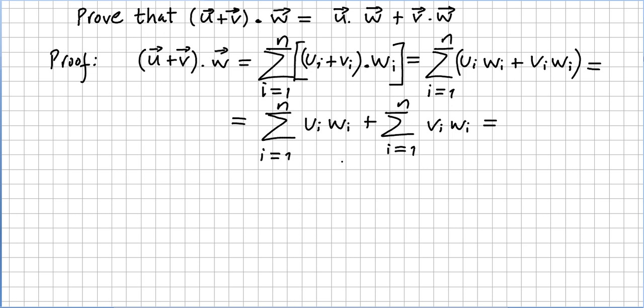But what is this? This is the definition of u times w. And what is this? Well, this is the definition. This here is the definition of v times w. So u plus v times w equals u times w plus v times w. And this concludes the proof.